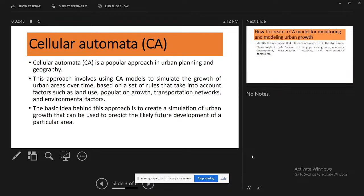Cellular automata is a popular approach in urban planning and geography. This approach involves using the CA model to simulate the growth of urban areas over time based on rules that take into account factors such as land use, population growth, transportation networks, and environmental factors. The basic idea is to create a simulation that can predict the likely future development of a particular area.